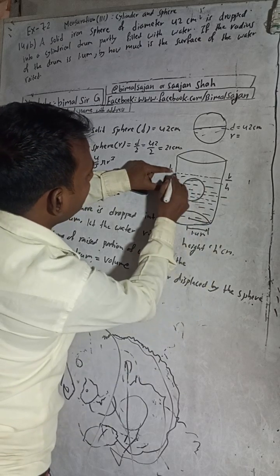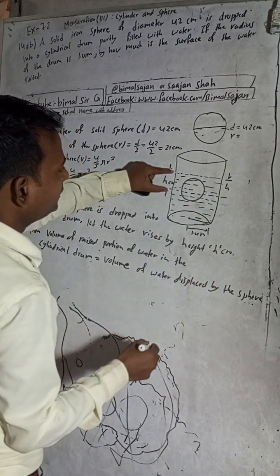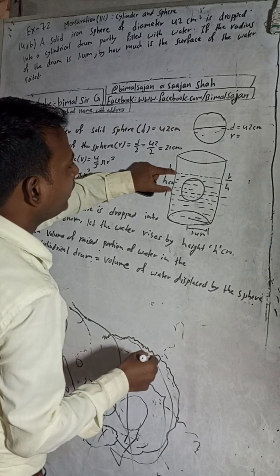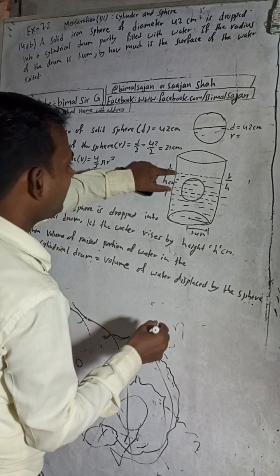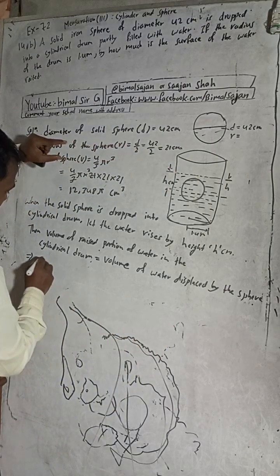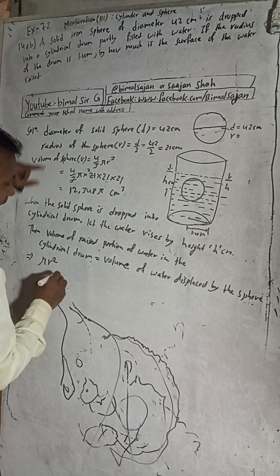If this is a cylindrical drum, the volume formula will be pi r squared h, where h is the height by which the water is raised.